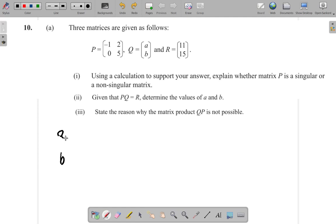Q, that's AB, multiplied by P, which is the matrix with elements negative 1, 2, 0, 5, and you want to multiply them here.